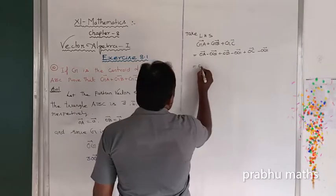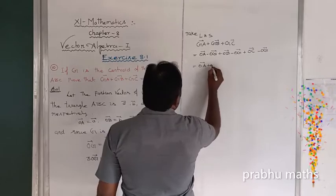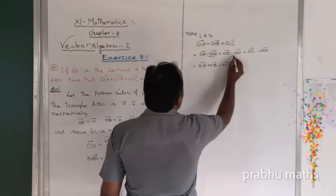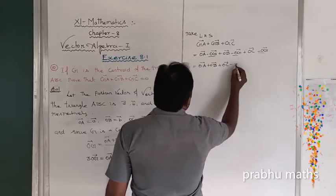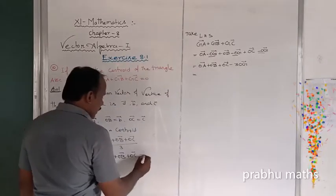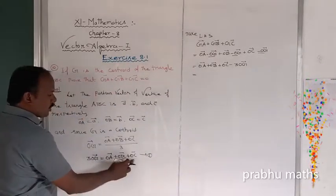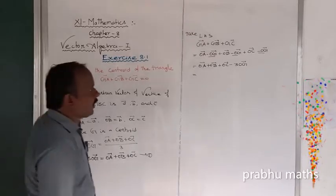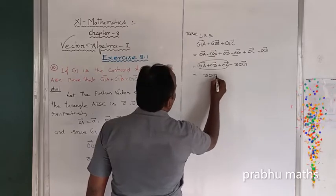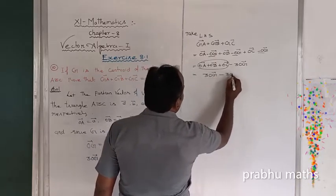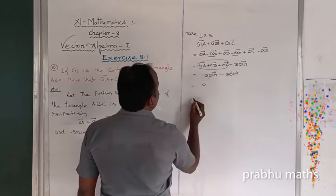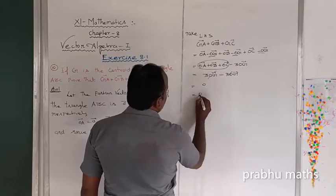So the first terms give OA vector plus OB vector plus OC vector, and the remaining terms give minus 3 times OG vector. This is equation number 1. So OA plus OB plus OC equals 3 times OG vector. Substituting: 3 times OG vector minus 3 times OG vector — these cancel, remaining is equal to 0.